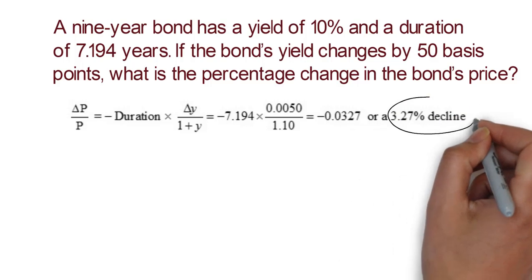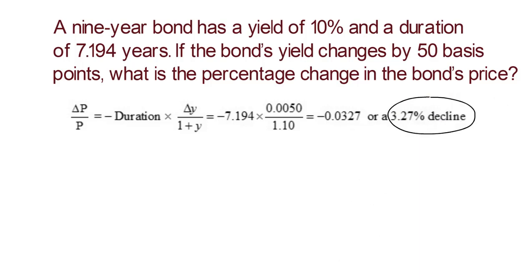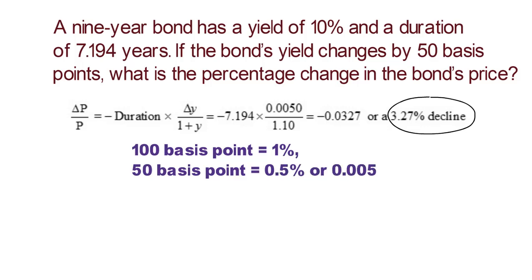3.27% decline. Please note that 100 basis points is equivalent to 1%, so 50 basis points equals 0.5% or 0.005.